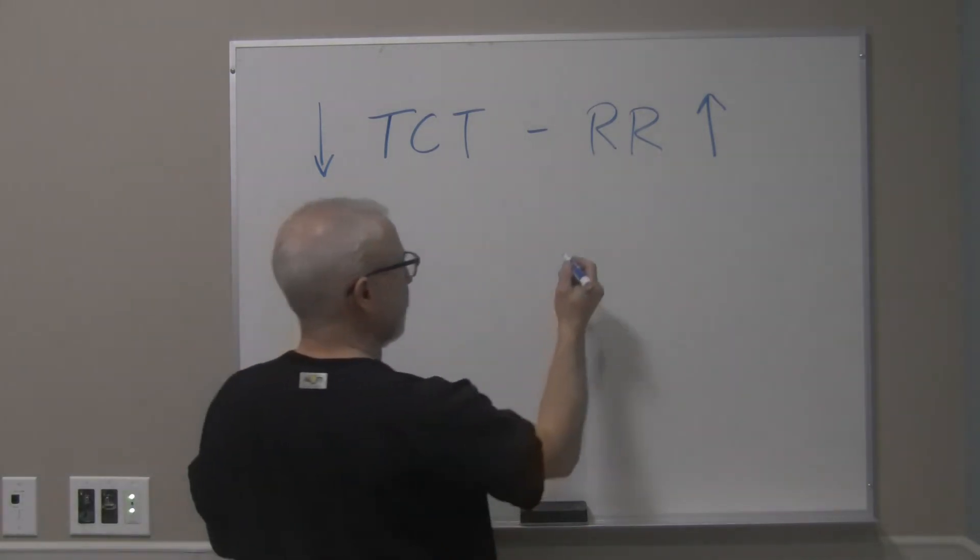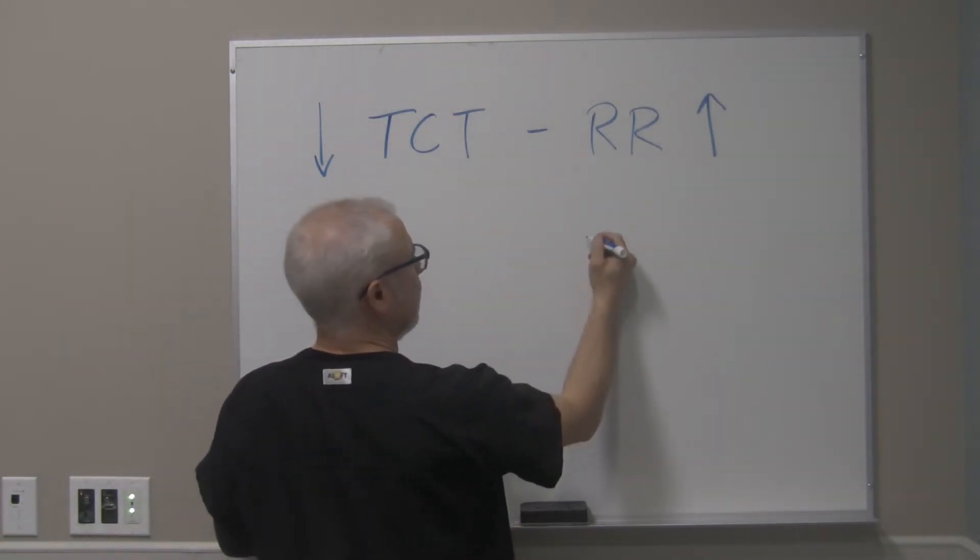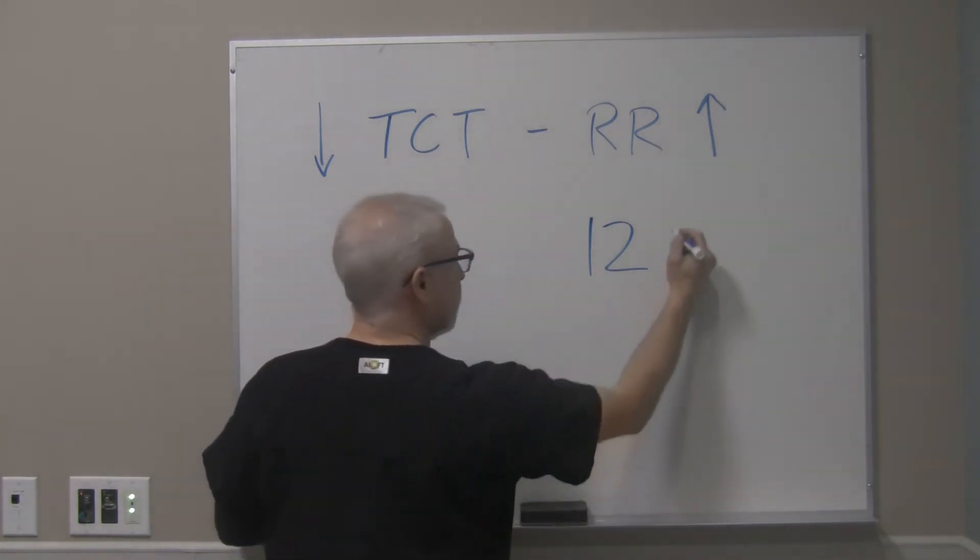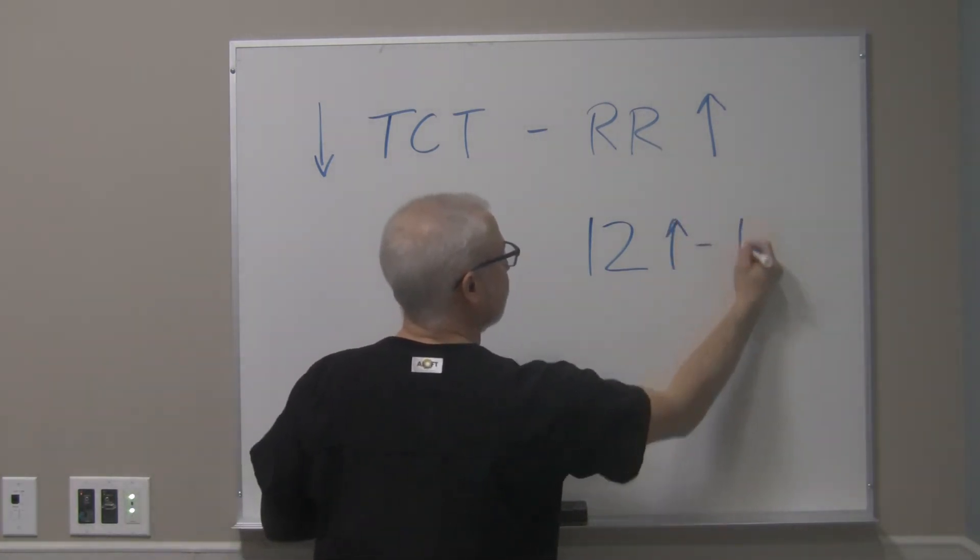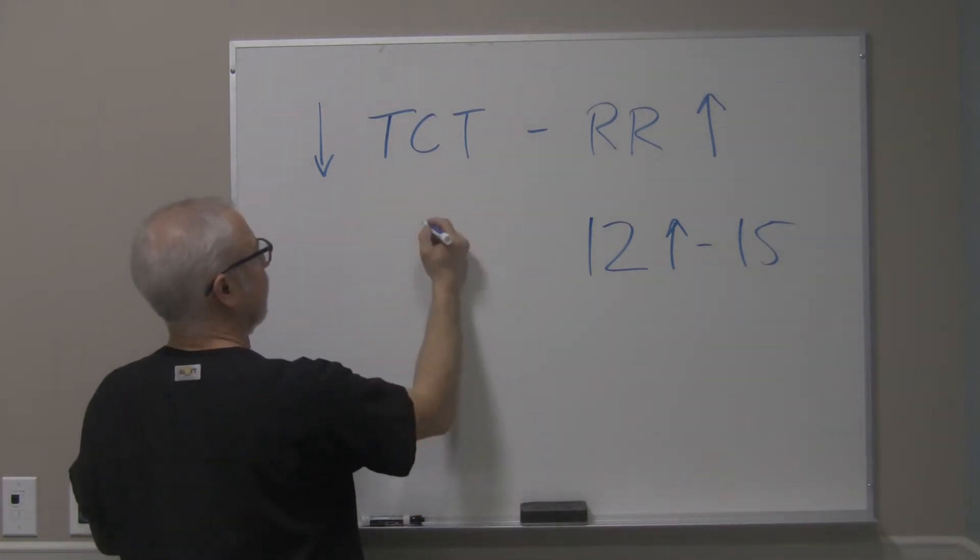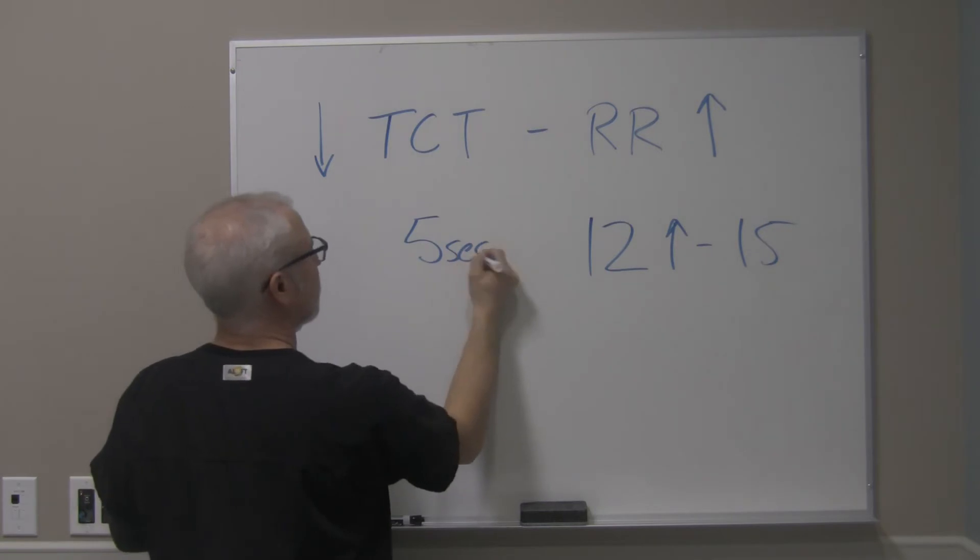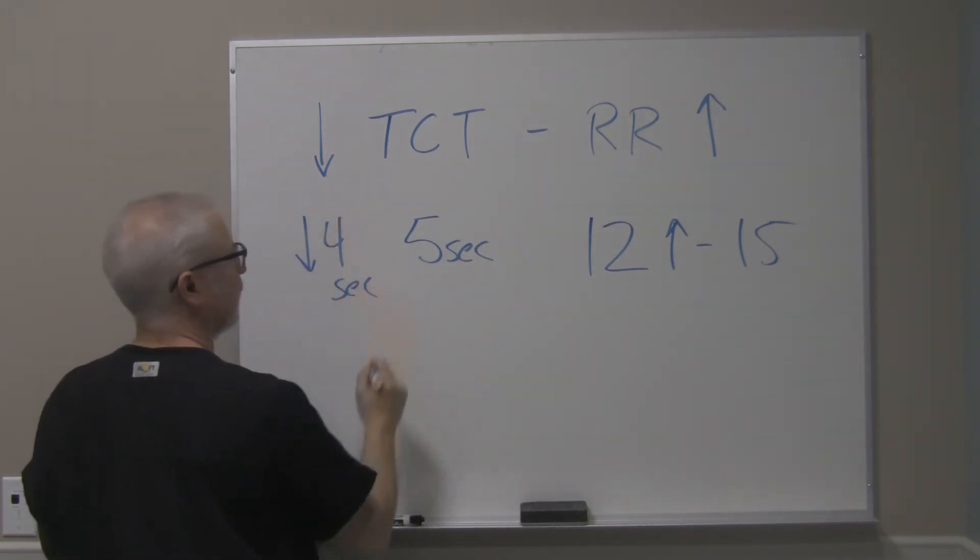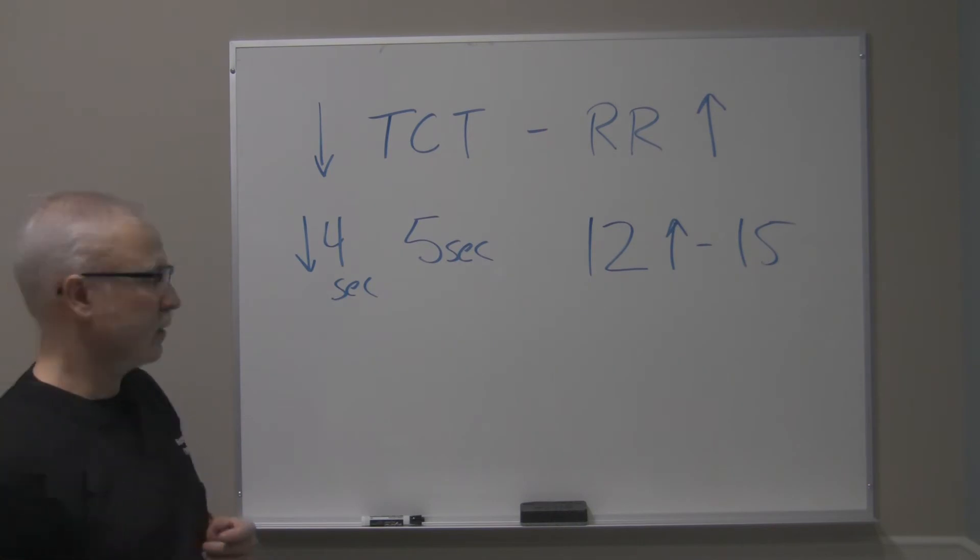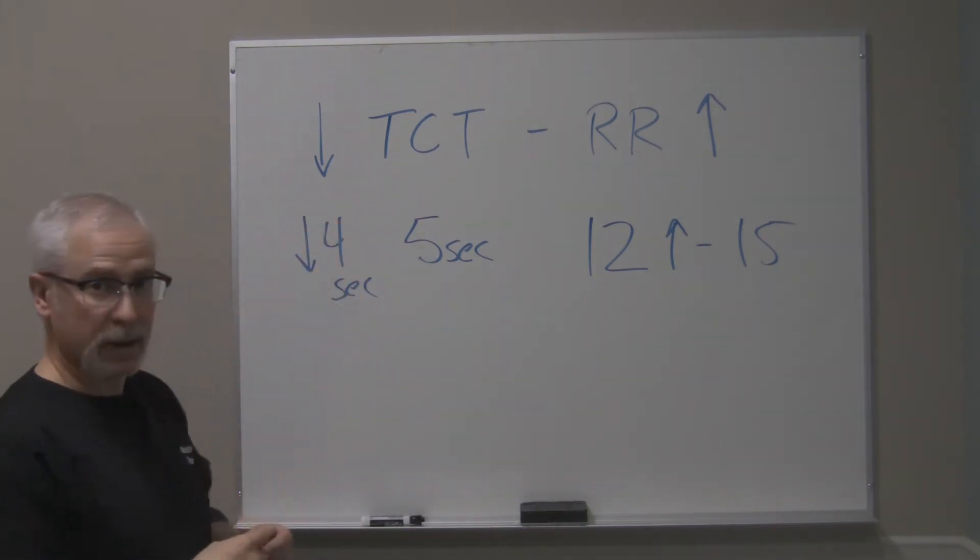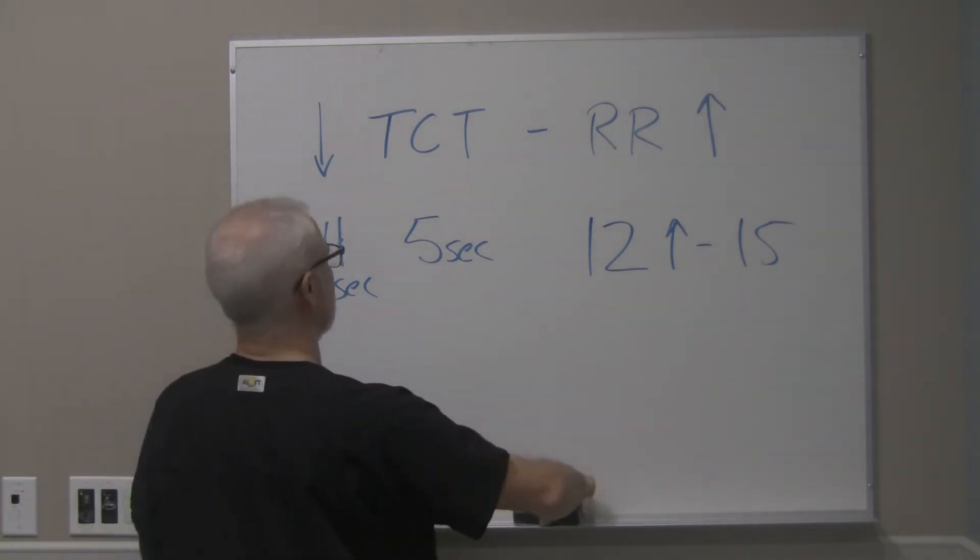So if we could say if the patient's respiratory rate was 12 and then it changed to 15, so it increased to 15, the total cycle time originally might have been 5 seconds. That new total cycle time now has decreased to 4 seconds. As the respiratory rate increases, total cycle time decreases. It's an inverse relationship here.